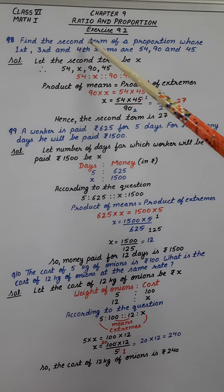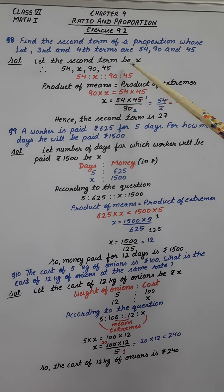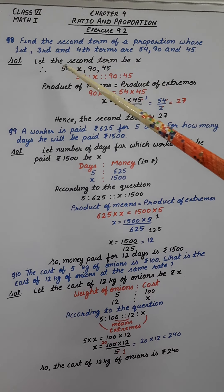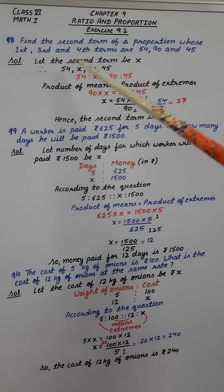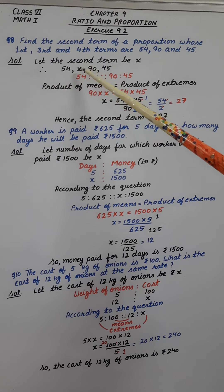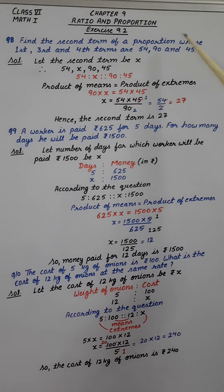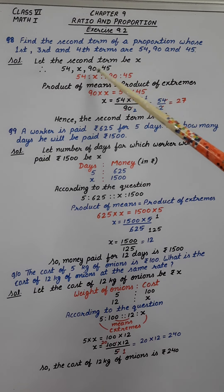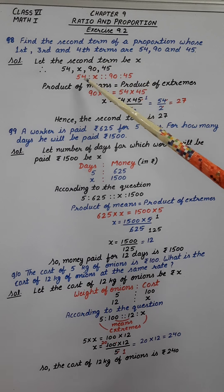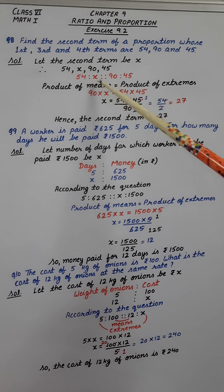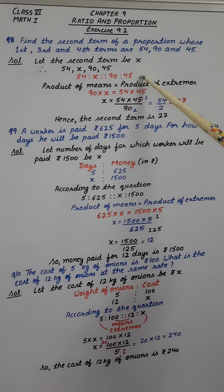We have to find out the second term. Let the second term be x. Now let's write all the numbers: first term 54, second term x, third term 90, and fourth term 45. Now let's write it in proportion: 54 ratio x, proportion 90 ratio 45.